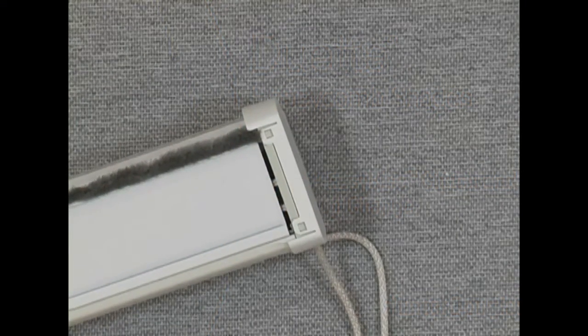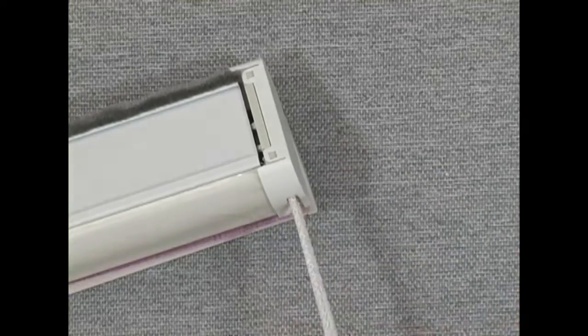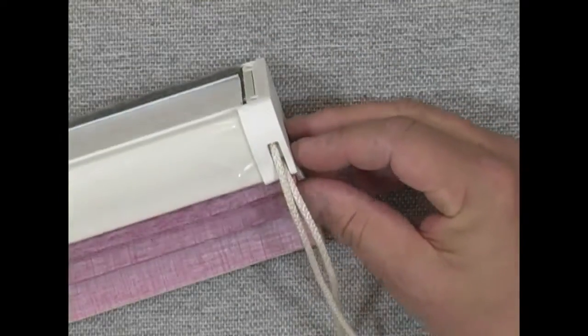We're going to change out the cord loop on a Duet Easy Rise shade. Looking at this, I've got this cord here that's coming through this end cap on the end of my shade.